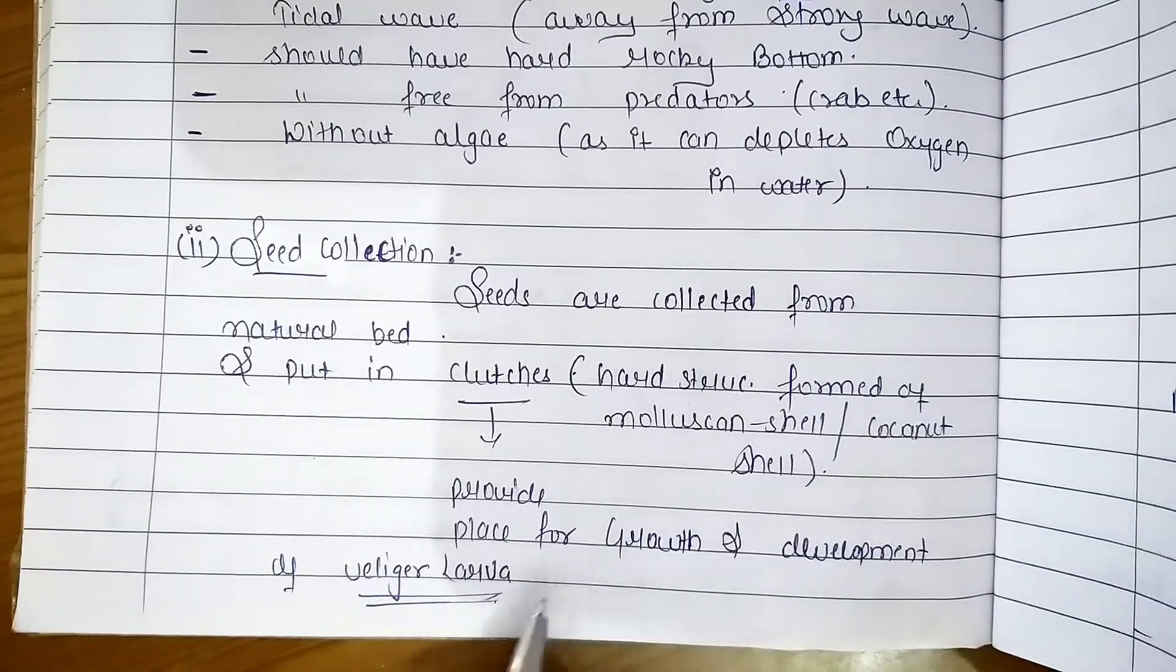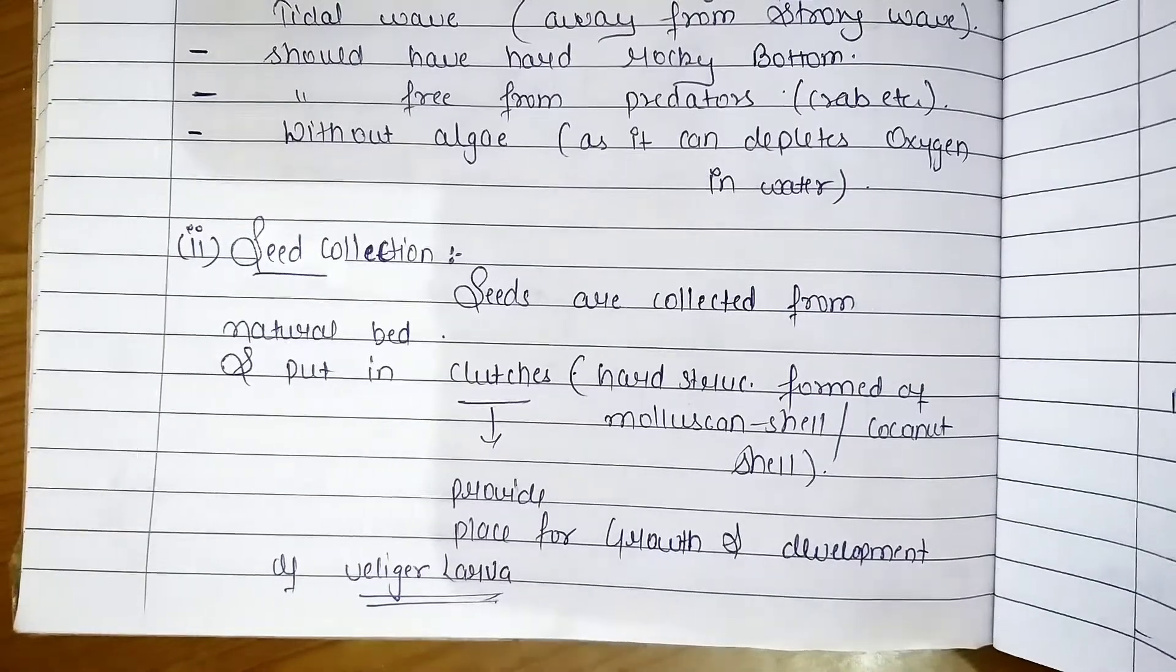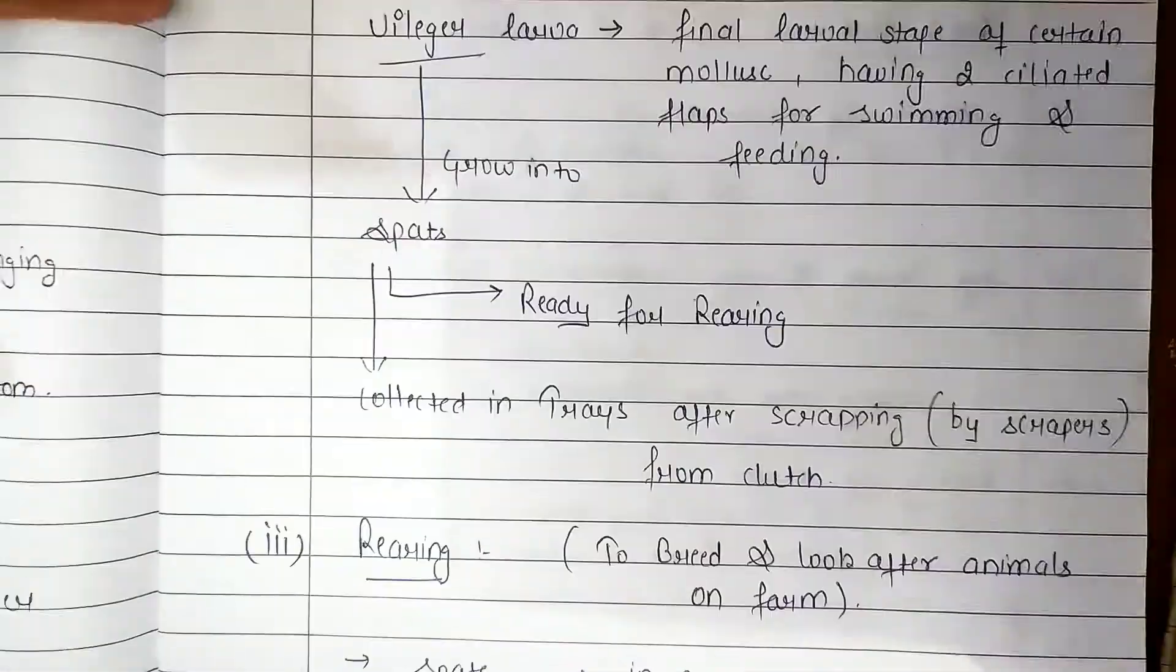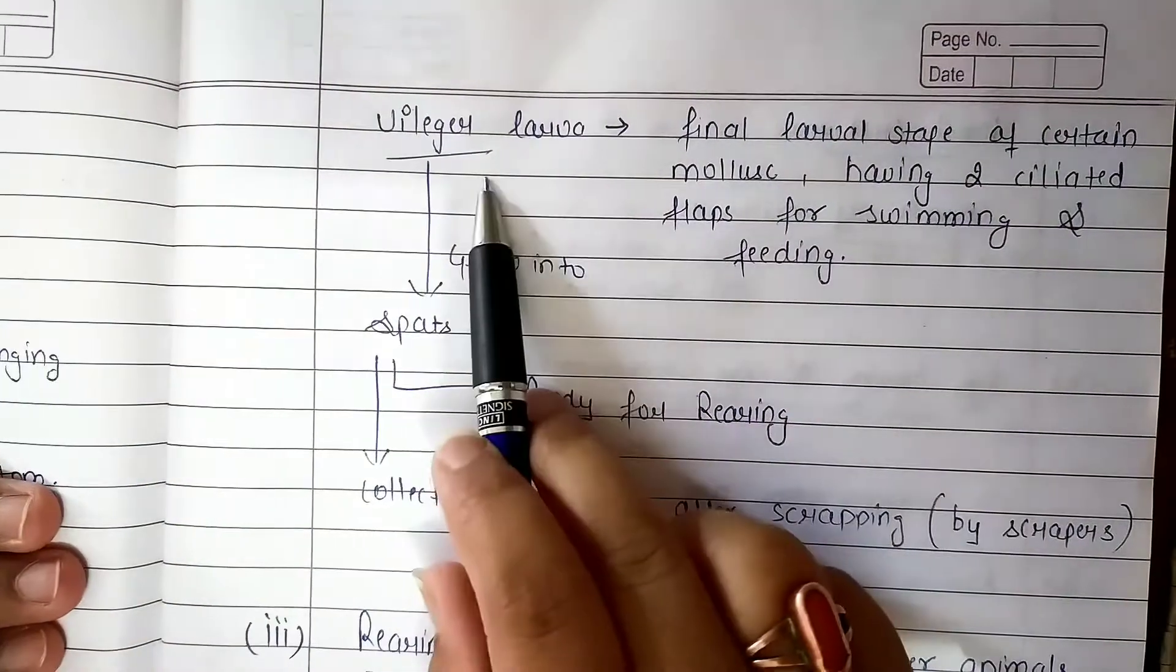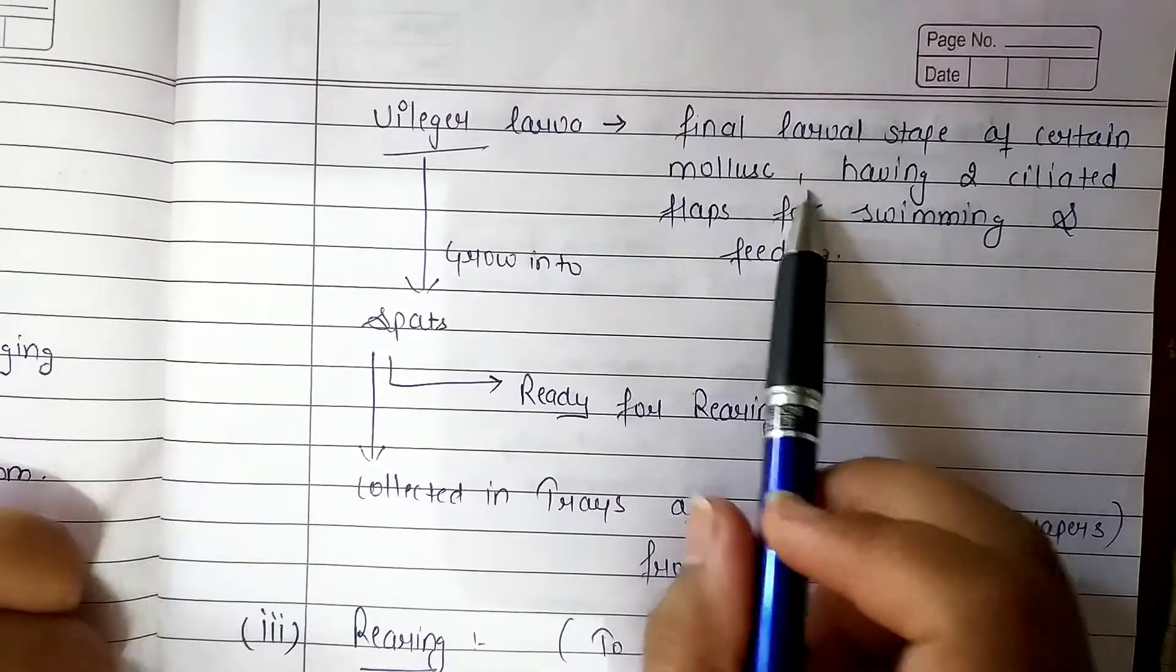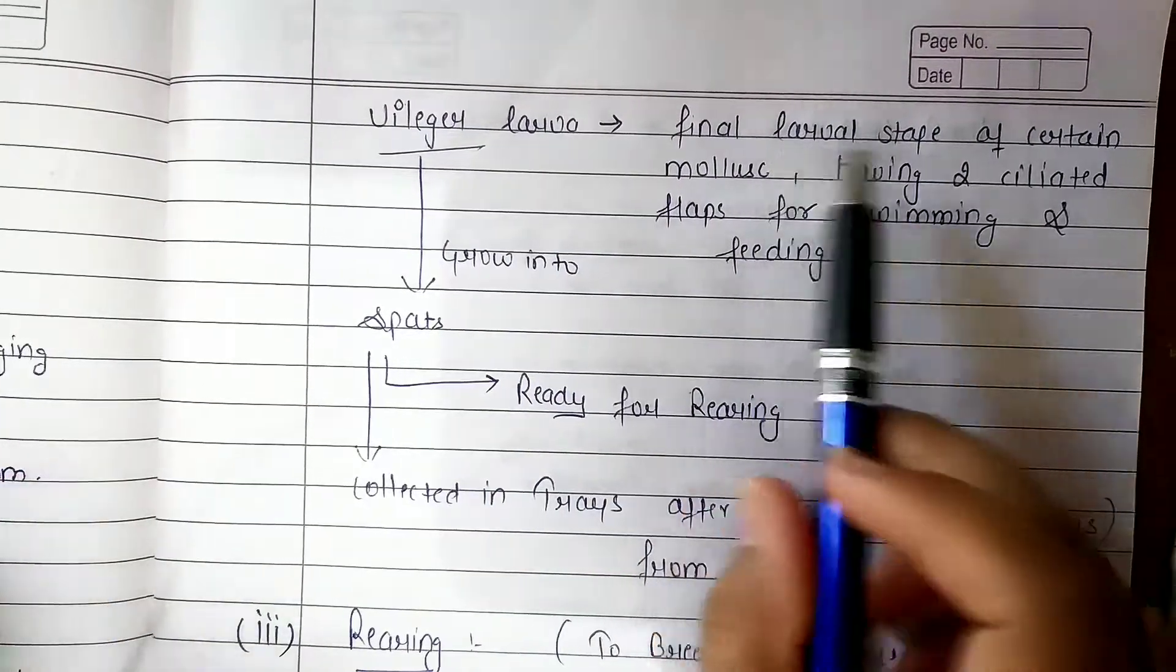The larvae is called lizard larva. It is the molluscan final larvae stage.